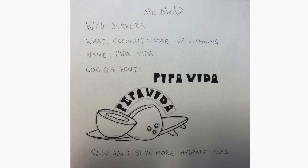So for me, you guys know I love surfing, so mine is for surfers. What is it? It's a coconut water mixture with vitamins, kind of to give surfers a little bit of energy to help them get through a long surf session. The name — I kicked around a few different names, but I came up with Pipa Vida. Pipa is kind of what they call coconut water when you go to Costa Rica and surf there, like when you drink it out of the coconut. And Vida just means life, so I thought it would be a cool name. I played around with some different logos and fonts.